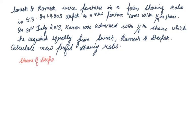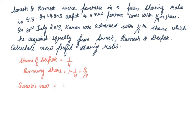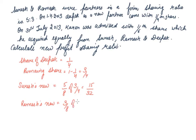First, calculating Deepak's admission: Deepak came with a 1/4 share, so remaining share is 3/4. Suresh's new share: 5/8 of 3/4 = 15/32. Ramesh's new share: 3/8 of 3/4 = 9/32. Deepak's share is already given as 1/4.